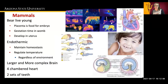Mammals bear live young, and they have a placenta, which is the food for the embryo, similar to the yolk sac. The gestation time in the womb is much longer than the gestation for other organisms to produce eggs. They develop inside the mammal's uterus, except for monotremes.